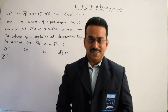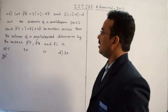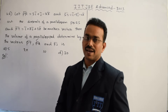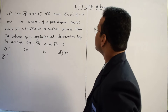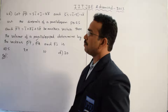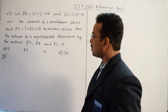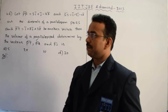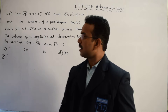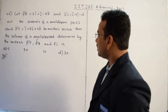Let us discuss the solution of the game question. Here the question is: let PR̄ equal to 3Ī + J̄ - 2K̄ and SQ̄ equal to Ī - 3J̄ - 4K̄ be the diagonals of a parallelogram PQRS, and PT̄ equal to Ī + 2J̄ + 3K̄ be another vector. Then the volume of a parallelopiped determined by the vectors PT̄, PQ̄, and PS̄ is?